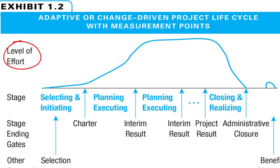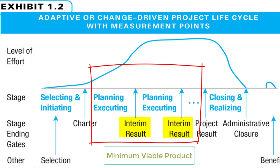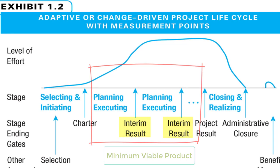Similar to the predictive lifecycle, the level of effort is initially low and grows as the project progresses. What is different is that planning and execution occur together in waves, with interim results delivered periodically. Each time, the project team is defining and seeking to deliver a minimum viable product that can be accepted by the client.